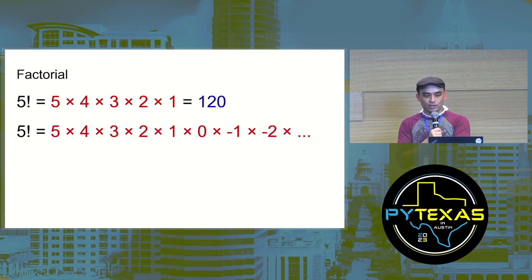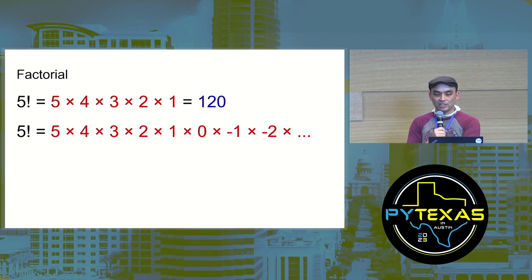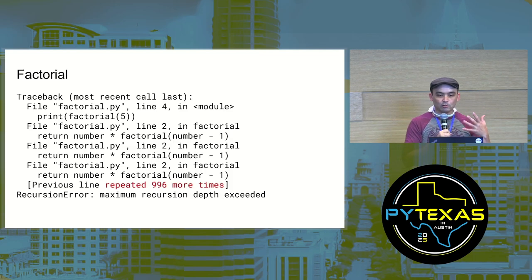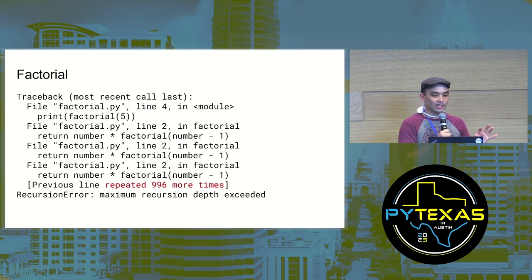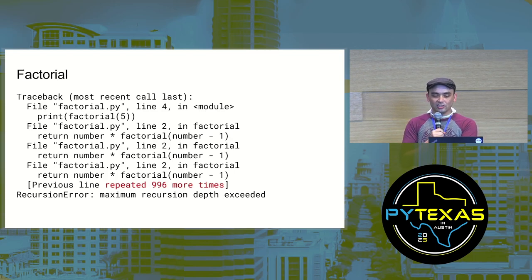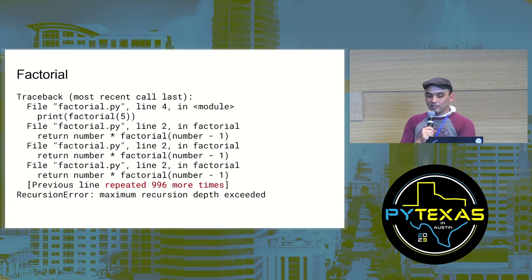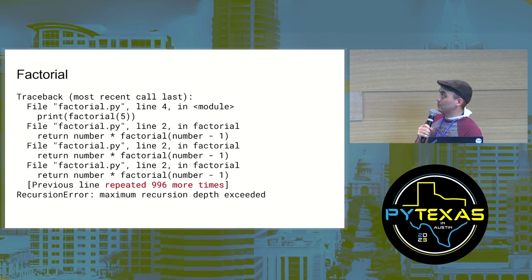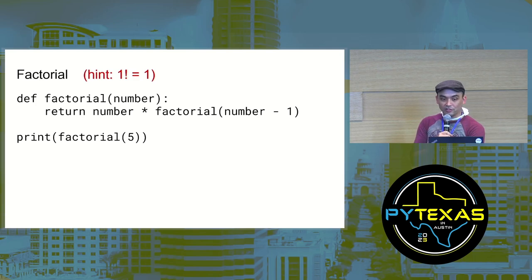Why does that happen? Our factorial function never stops at one — it just keeps going. If you ever have a stack overflow, the problem is that your algorithm never stopped recursing. Programs can't make recursive calls forever because every function call adds a frame object to the call stack, which takes up memory. Python cuts it off after about 1000 function calls without any return — that's why the stack trace says 'repeated 996 more times.'